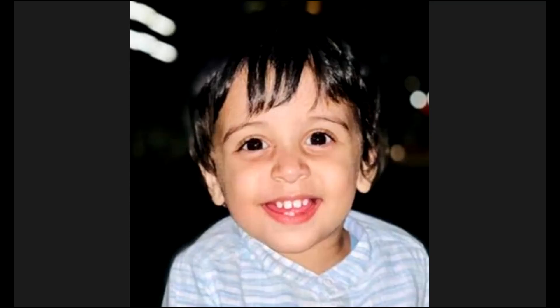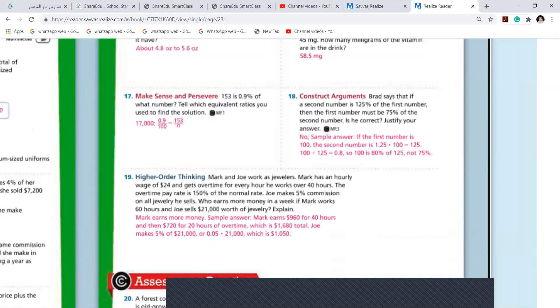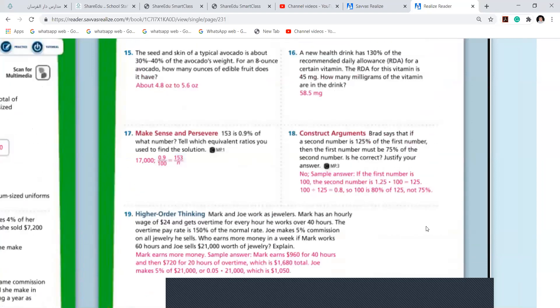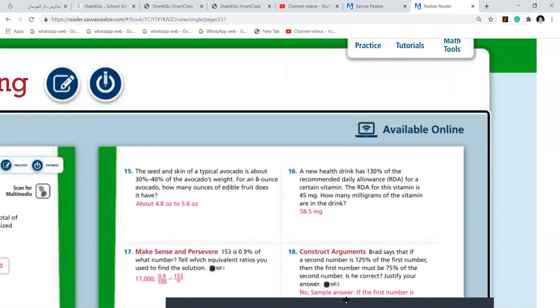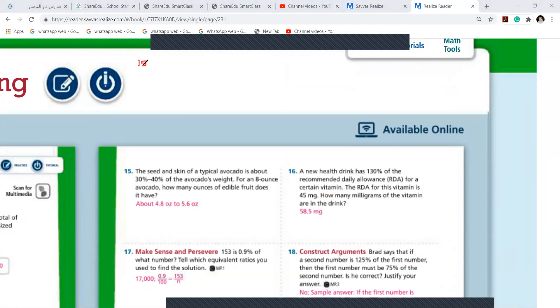Questions 13 and 14, please put a cross mark. We'll directly do the 15th question. Question number 15: The seed and skin of a typical avocado is about 30 to 40%. Let us first do for 30%.